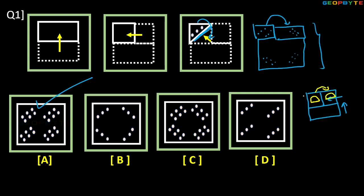Left to right or right to left opening works as a mirror image. We already know the mirror image concept. Suppose the diagram is an arrow symbol — in the mirror, it looks like this.